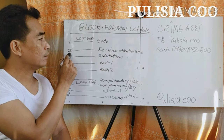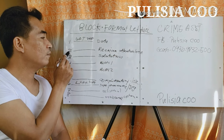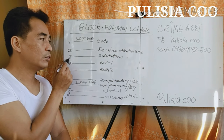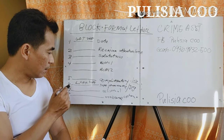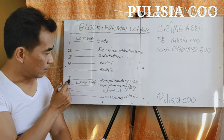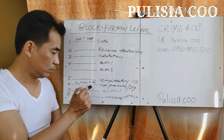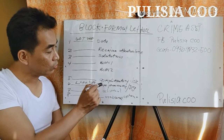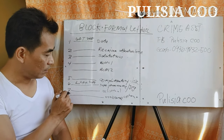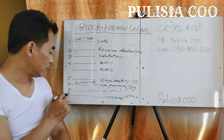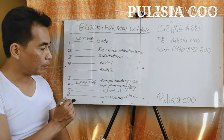The second part, also starting from the left, is the receiver or attention line. This is followed by the salutation, then the body, then the complimentary close — all on the left side. Also on the left side is your name and signature. The optional parts, seven and eight, are carbon copy and closure.